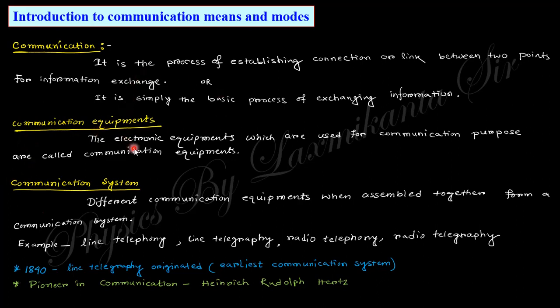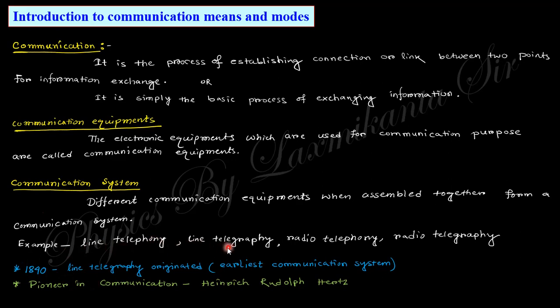Communication equipment refers to the electronics equipment used for communication purposes — that means if you want to communicate through voice, images, or other things. A communication system is formed when different communication equipment are associated together. The electronics communication equipment as a whole can be called a communication system. Examples include line telephone, line telegraphy, radio telephone, and radio telephony.